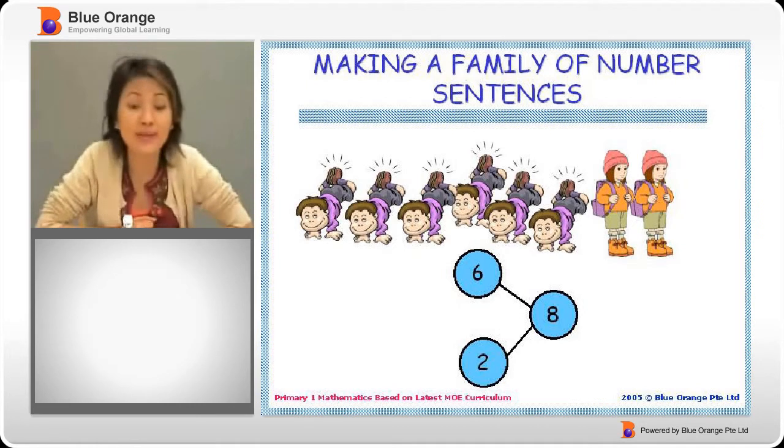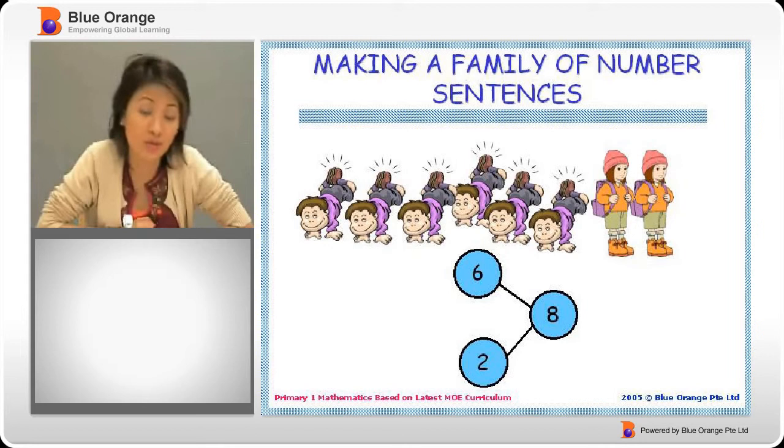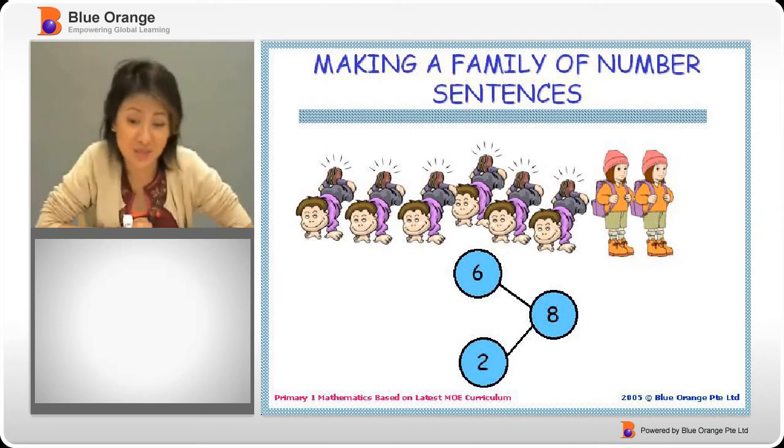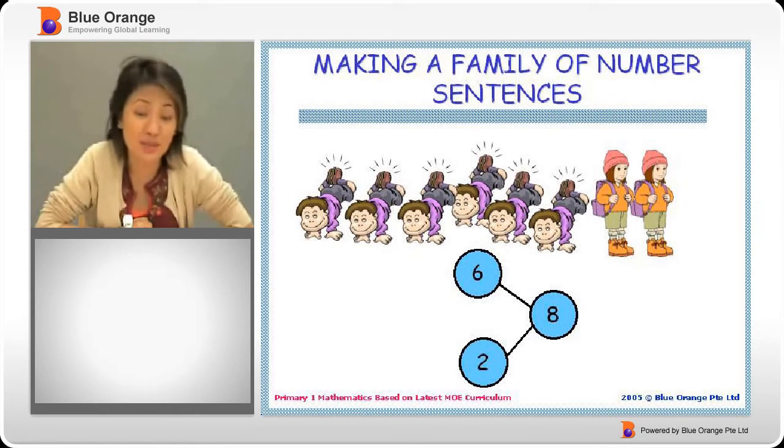Remember we talked about number bonds. If you look at this, we see that there are some boys and some girls and there are a total of eight children. Now with these three numbers, we can make at least four number sentences. By now, you will have learned addition and subtraction.